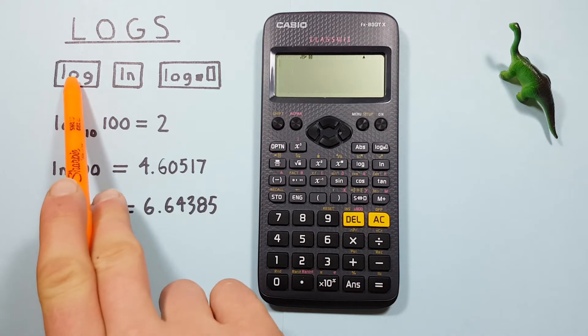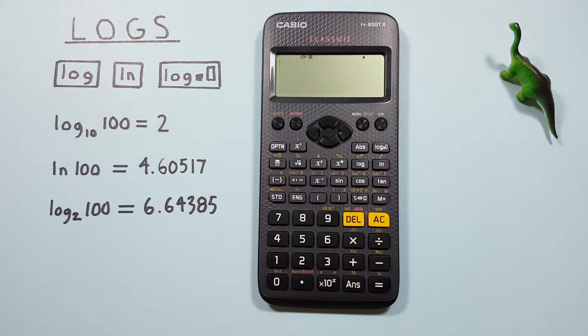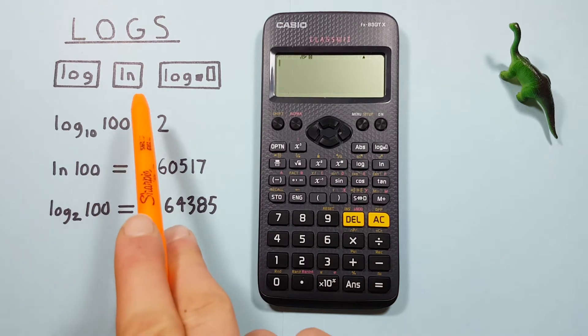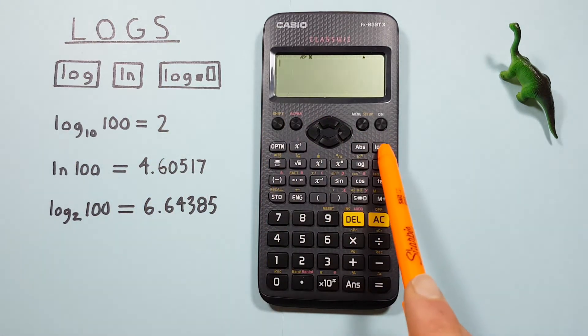looks like this, located here. The ln key, or natural log key, looks like this, located here. And the log with the base option looks like this, located here.